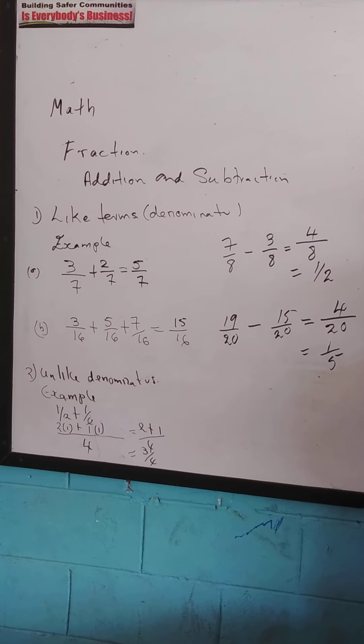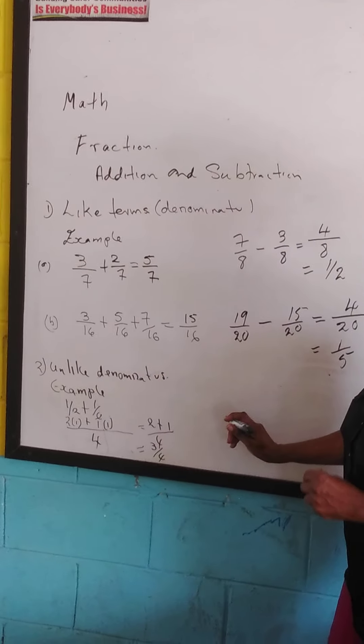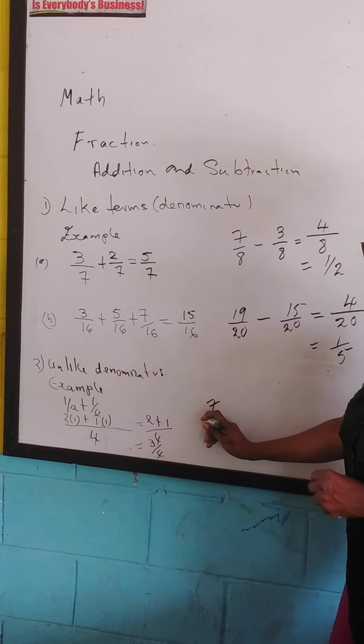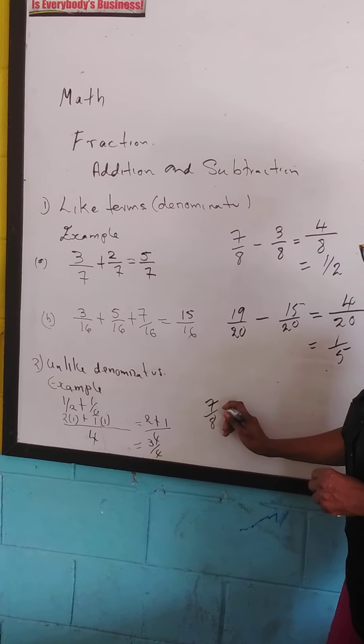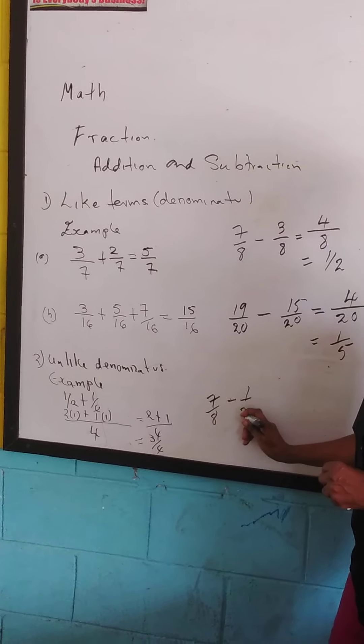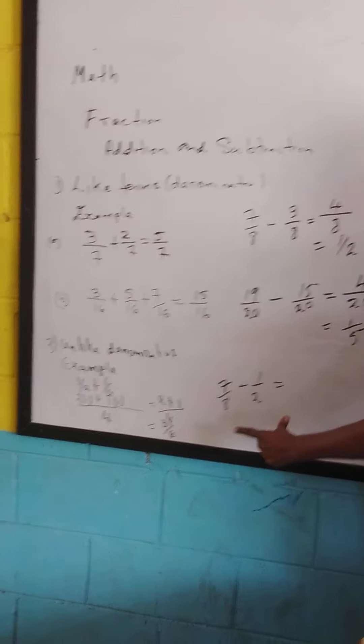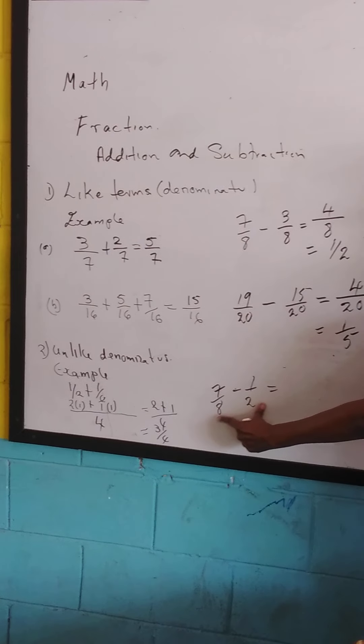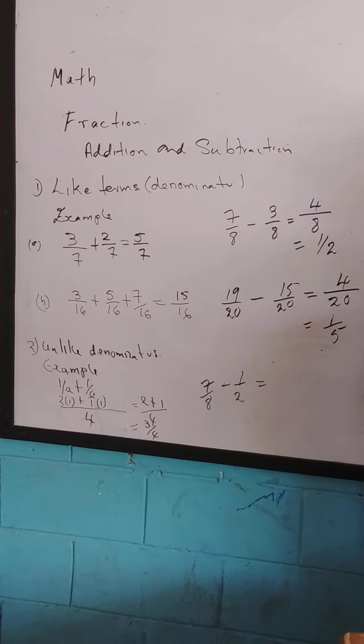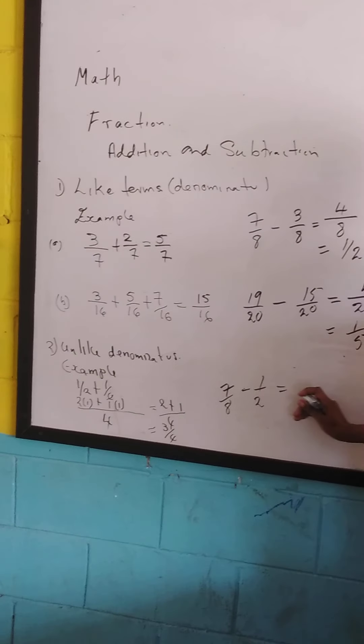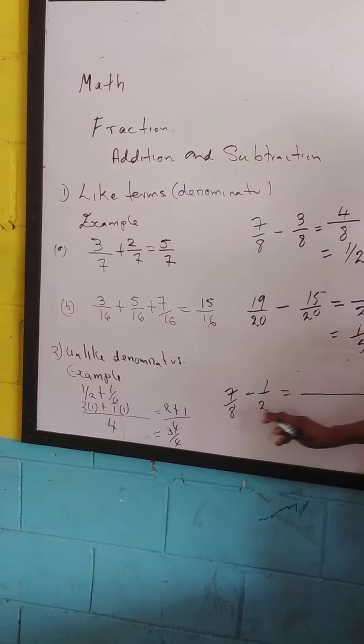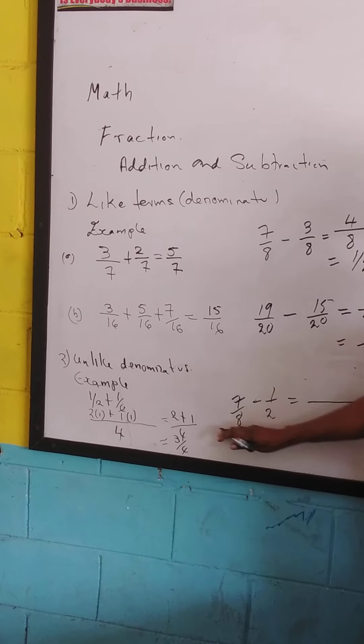Unlike denominators, let us have 7 over 8 minus a half. Now, we're going to ask which two numbers can 8 and 2 go into without a remainder. And the denominator here, the least common number here is 8.